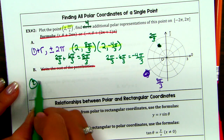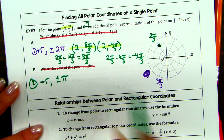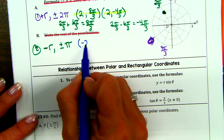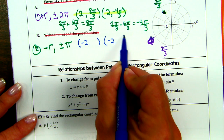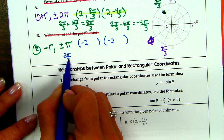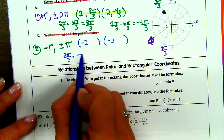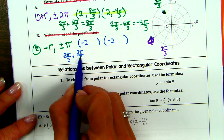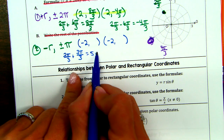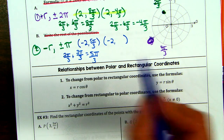A second way is making your r negative and adding or subtracting just pi. So we'd have negative two, something. I'm at 2 pi over 3 and I add pi — pi with denominator 3 is 3 pi over 3, giving 5 pi over 3. And subtract to get negative pi over 3.